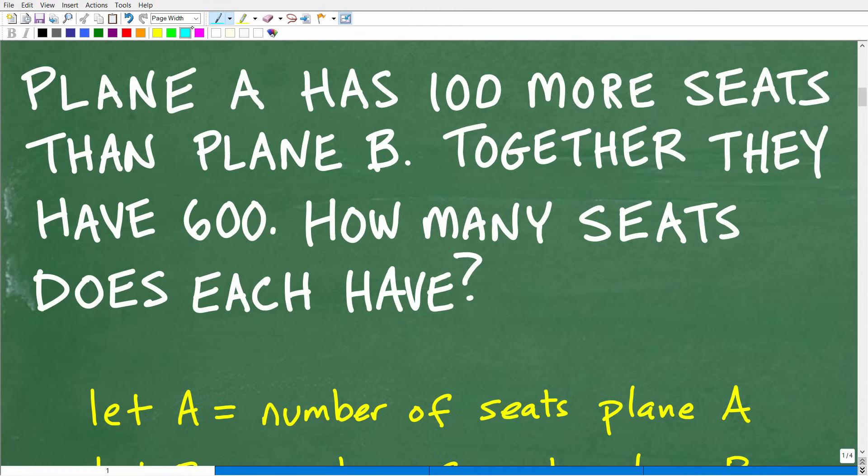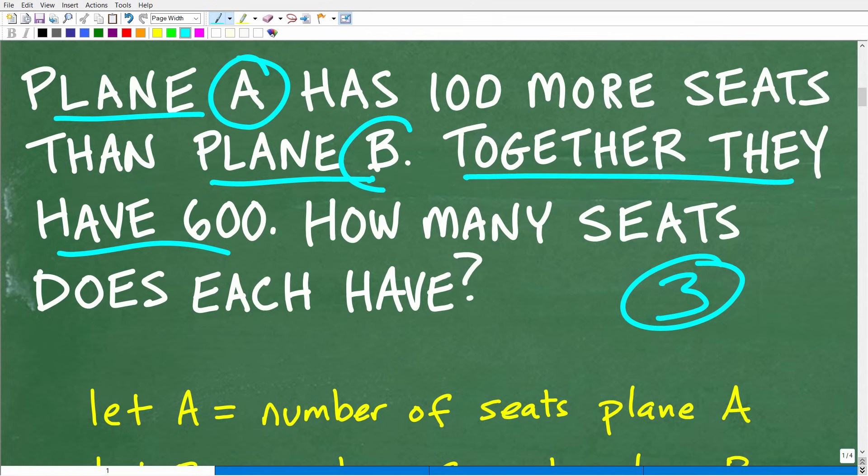Okay, so first things first, we have a math word problem. So you always want to read a problem at least three times before you do anything. Here again, we have plane A and plane B. Plane A has 100 more seats than plane B. Now we don't even know how many seats plane A has or how many seats plane B has. We just have this relationship between these planes. And then of course we have some information that together they have 600 seats. But again, we are looking to solve for these two variables.